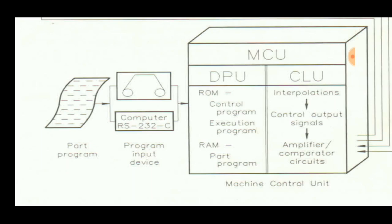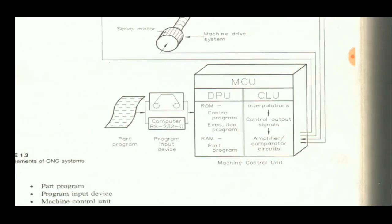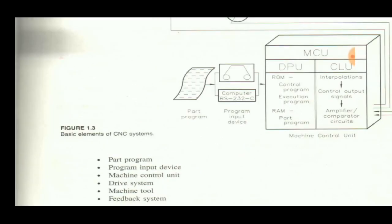The CLU interpolates: if we provide a set of instructions it chooses the correct order and interpolates. For example, if you want to drill a 5mm diameter hole and then switch to 5.5mm, it interpolates automatically without needing separate instructions for 5.5mm — just input 5.5 as a value. It also controls output signals and amplifier or comparator circuits. The MCU connects to the program input device where the part program is fed in, then the control unit obtains the program and sends it to the machine system, which consists of the part program, program input device, machine control unit, drive system, machine tool, and feedback system.